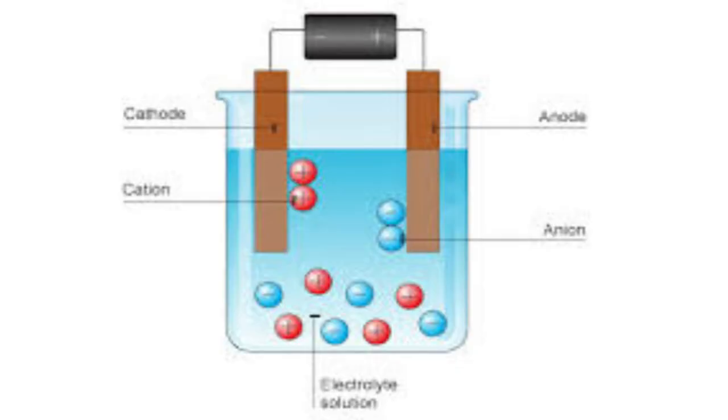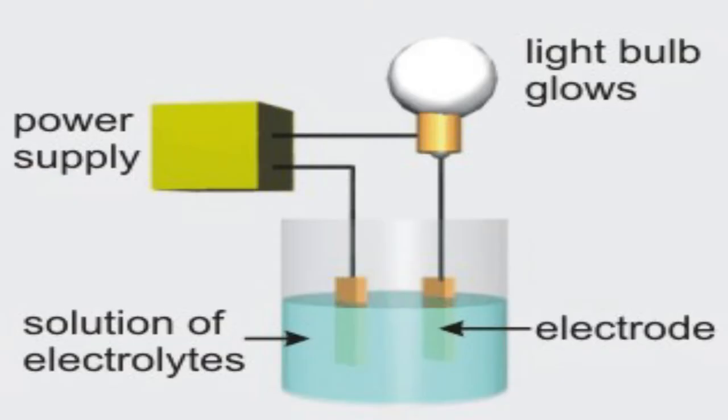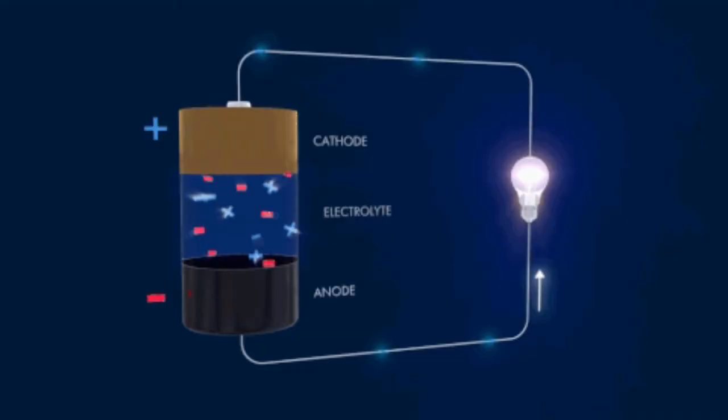To test solutions for ions, we can use an apparatus that consists of a battery and a pair of electrodes connected by wire to a light bulb. The light bulb glows when electricity can flow. In order to conduct electricity, a substance must contain freely mobile charged particles.